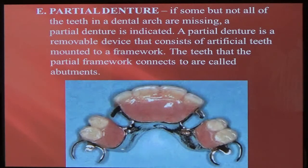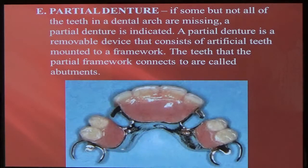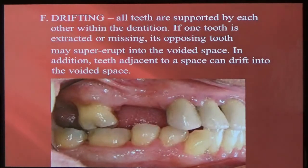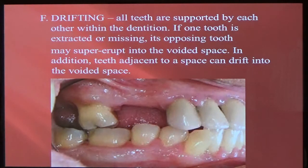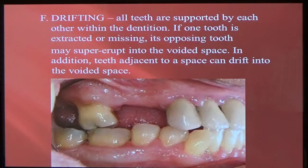We'll talk more about that when we do restorations. All of these are restorations — crowns, fillings, dentures, Maryland bridge. Drifting is when a tooth starts shifting either forward or backward. If there's a tooth missing, you can see how a tooth drifts forward — it changes the bite. It's not something you want to happen, but if nothing's done to replace missing teeth, you get teeth that start to shift, changing the patient's bite.